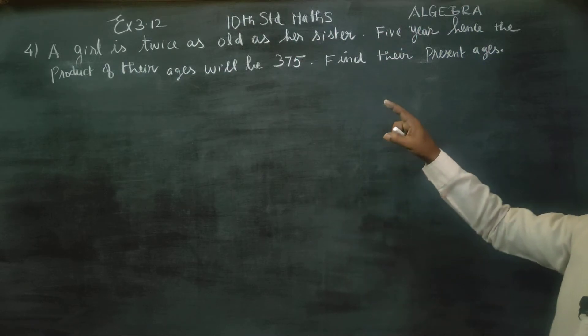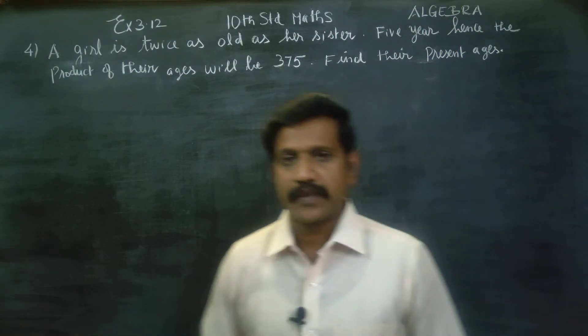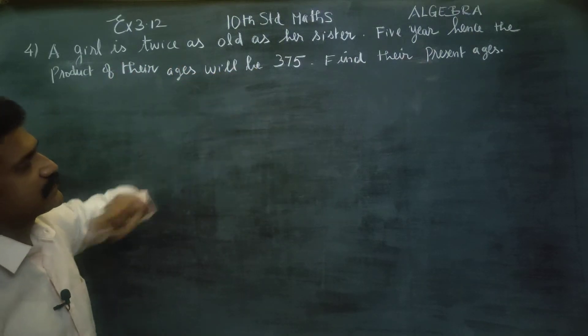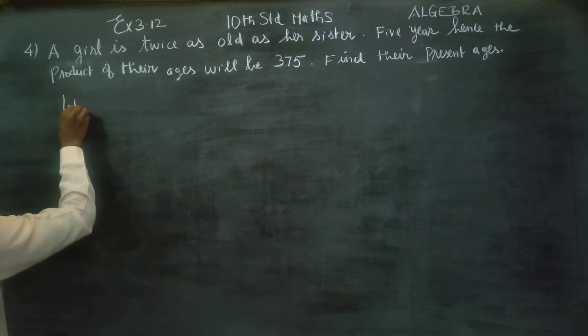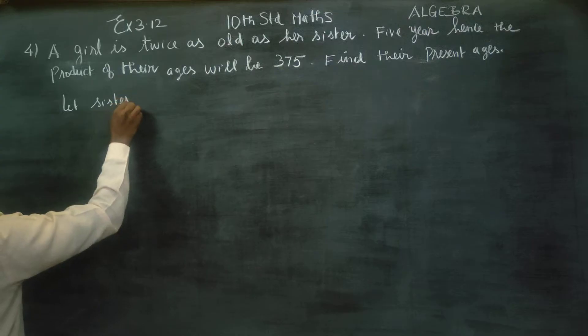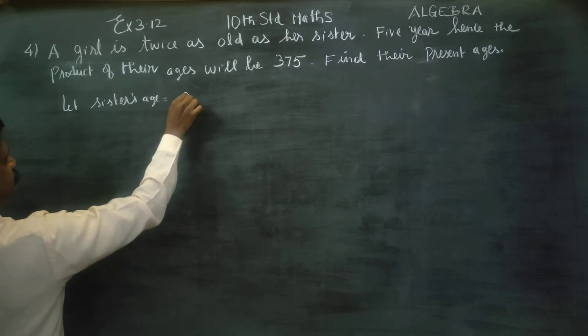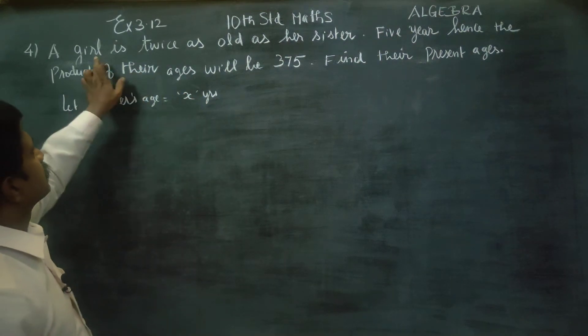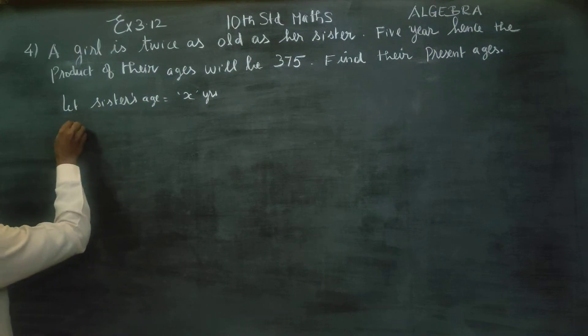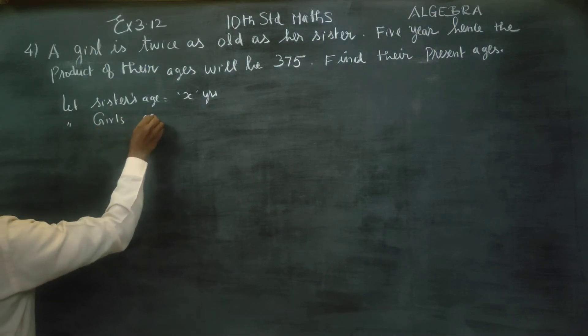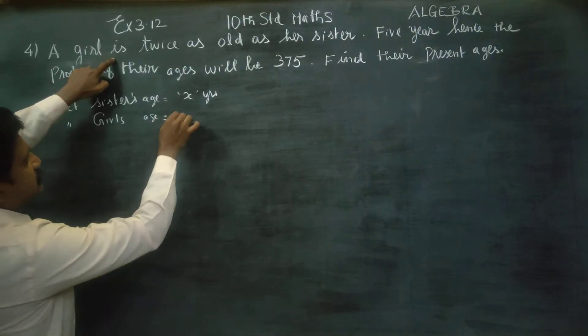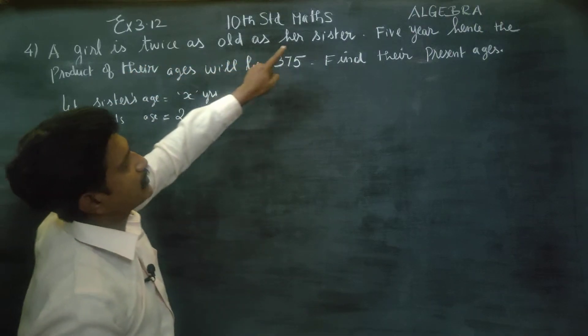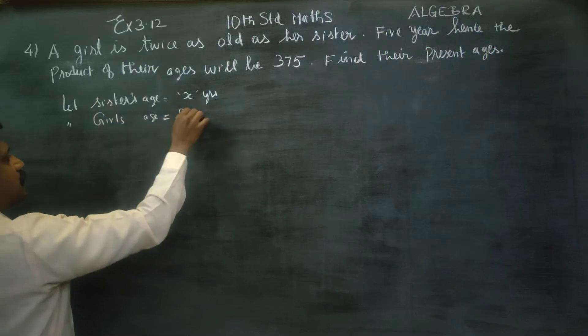a girl is twice as old as her sister. Let sister's age is equal to x years. Sister age is x. Girl is, let girl's age is equal to twice as old as her sister.